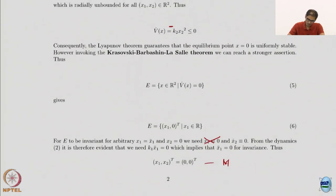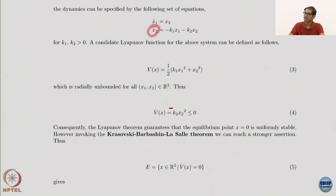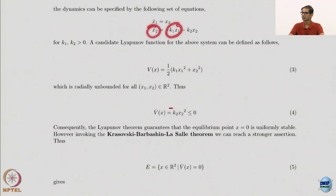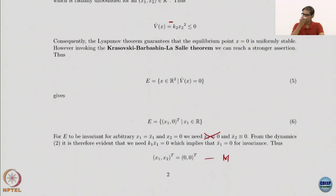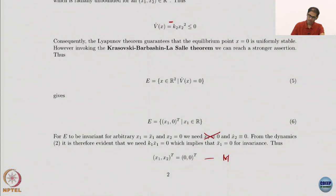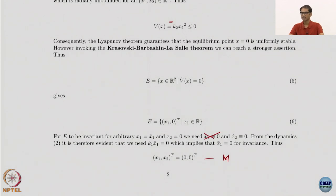We only need x2_dot to remain at zero, because if x2_dot is non-zero, we move out of the x2 = 0 set, which is a problem. For x2_dot to be exactly zero, with x2 already zero by the definition of E, the only way is for x1 to also be zero, since k1 and k2 are strictly positive. So the only invariant set is the origin where both x1 and x2 are zero — that becomes the largest invariant set M. Since M contains only the origin, the origin is asymptotically stable. Note we cannot conclude exponential stability from LaSalle's invariance principle.